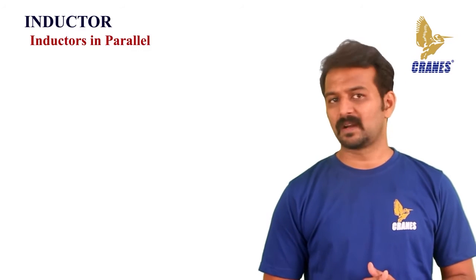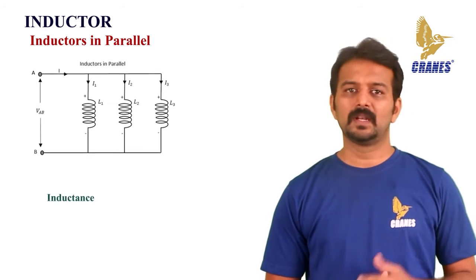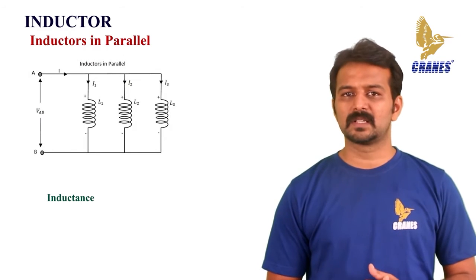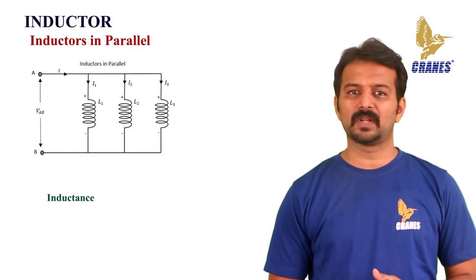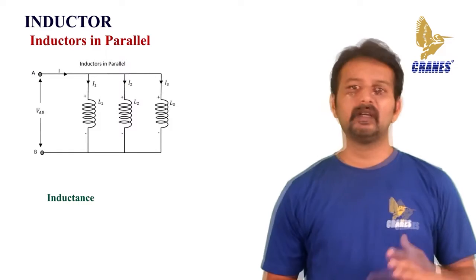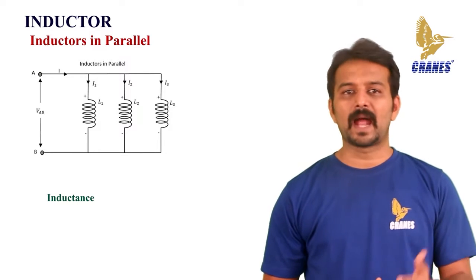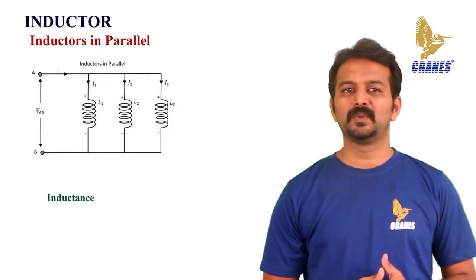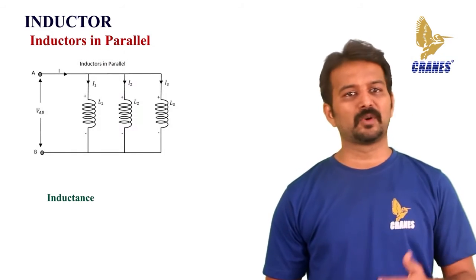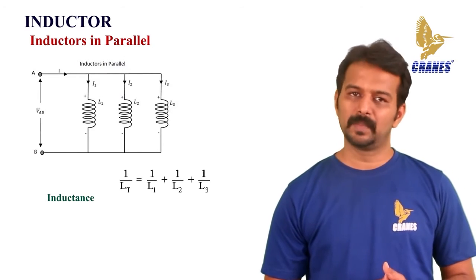Let's look at inductors connected in parallel. Let us observe what happens when few inductors are connected in parallel. Consider three inductors with different values as shown. The total inductance of a circuit having parallel inductors is calculated differently from the series method. Here, the reciprocal values of the individual inductances are added, and then the inverse of the algebraic sum gives the total inductance. If L1, L2, and L3 are the inductances in the circuit, the total inductance is derived from their reciprocals.